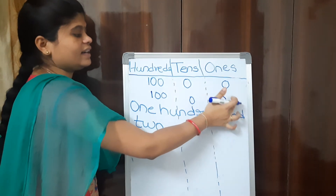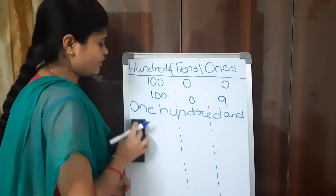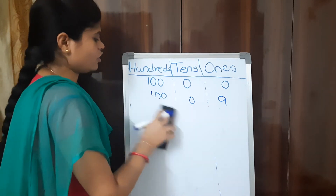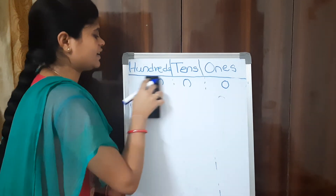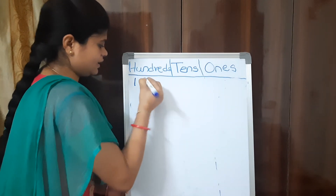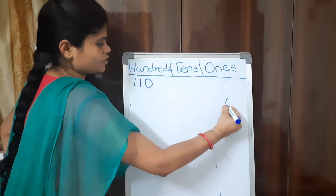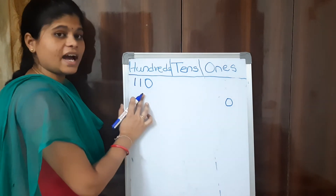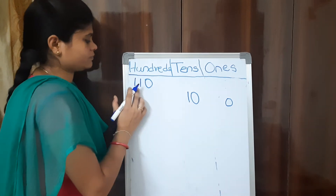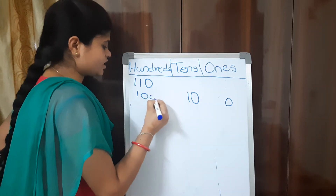After 109, the next number we get is 110 — one hundred and ten. How to write 110 in place values: it has 0 ones, so write 0 in the 1s place; it has 1 ten (which is 10), so write 10 in the 10s place; and it has 1 hundred, so write 100 in the 100s place.